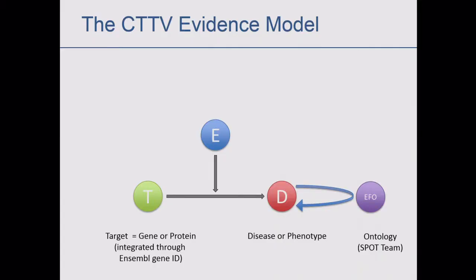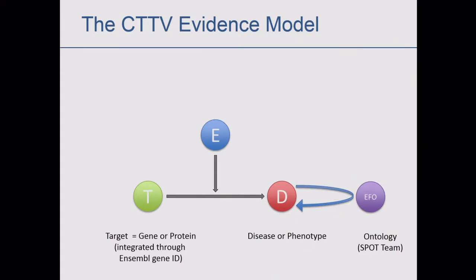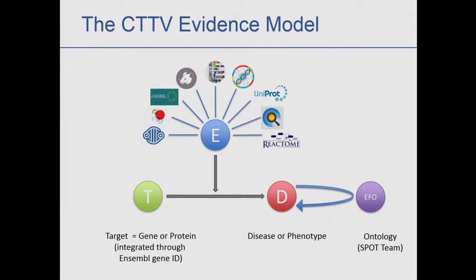Underneath the platform, the philosophy is: can we provide a summary of the evidence that relates a target to a disease or phenotype? It's this simple model of what evidence is saying that this target is associated with this phenotype. We describe targets using standard gene nomenclature — Ensembl IDs — and integrate synonyms from proteins so you can identify the target. On the disease side, we use an ontology called the Experimental Factor Ontology to relate diseases to each other, which allows us to build up a hierarchy and move smoothly between different diseases or phenotypes.